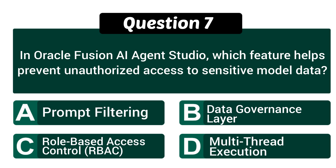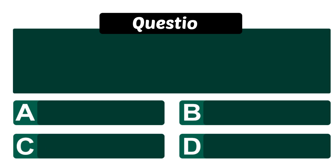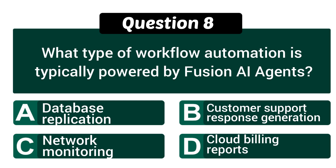Question seven: in Oracle Fusion AI Agent Studio, which feature helps prevent unauthorized access to sensitive model data? Correct answer: C — role-based access control (RBAC). Question eight: what type of workflow automation is typically powered by Fusion AI agents? Correct answer: B — customer support response generation.